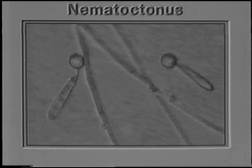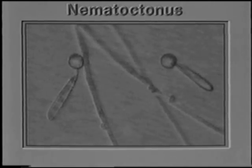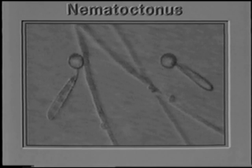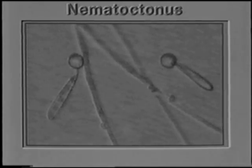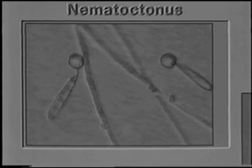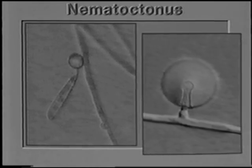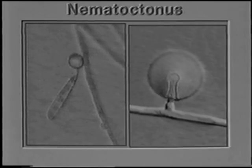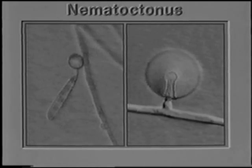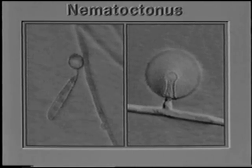The genus Nematoctonus uses two infection strategies. Some species produce adhesive spores, like the endoparasitic fungi. Others form adhesive traps on their hyphae, like the nematode-trapping fungi. Therefore, Nematoctonus links the two types.